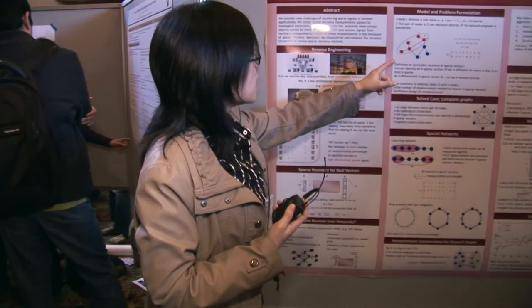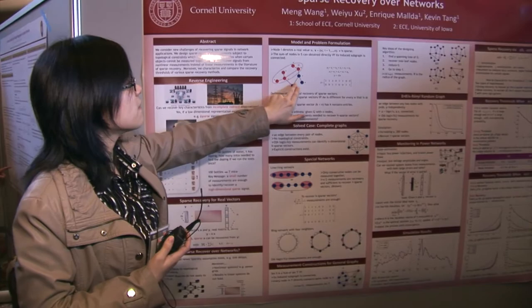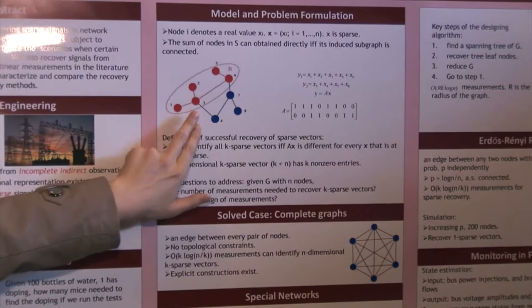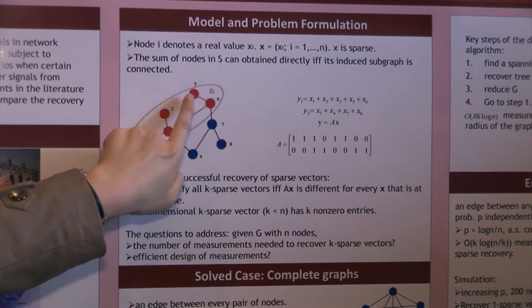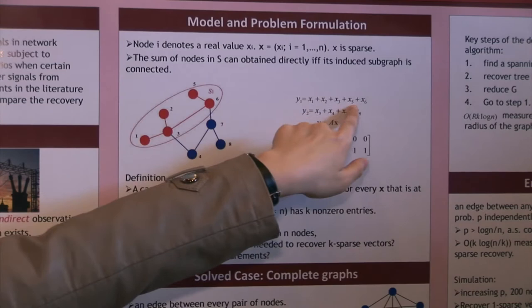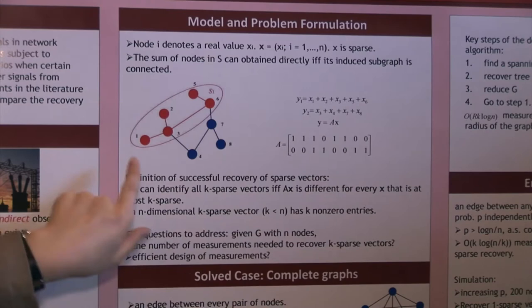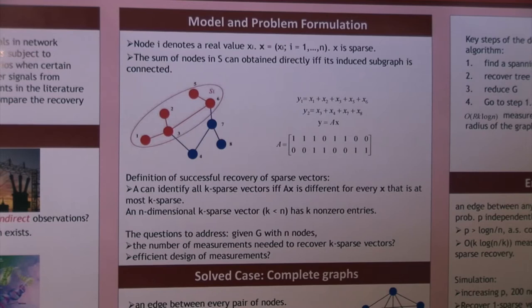So we actually use a graph to characterize those constraints. So each node denotes some value we want to recover, x. x denotes all these node values and x is sparse. Then we characterize the topological constraint in this way. A subset of these nodes can be measured together in one measurement if and only if their induced subgraph is connected. For example, these five nodes, they're connected, so you can measure the summation in one measurement. And three, four, five, seven, you can measure it in one measurement. However, for one, six, it's not directly connected, so you cannot measure their summation in one measurement.